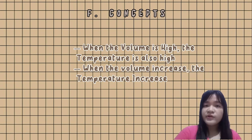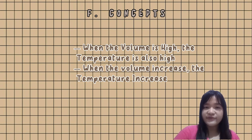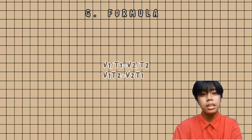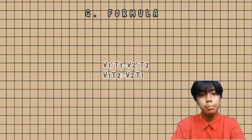When the volume is high, the temperature is also high. When the volume increases, the temperature increases. What is the formula? Initial volume over initial temperature is equal to final volume over final temperature.